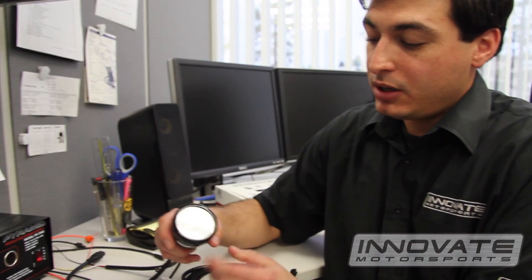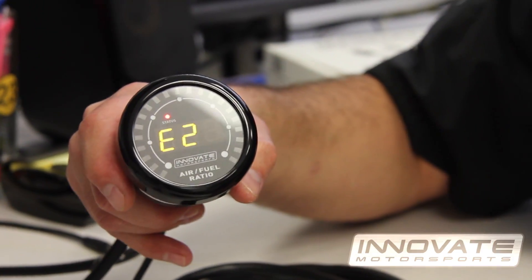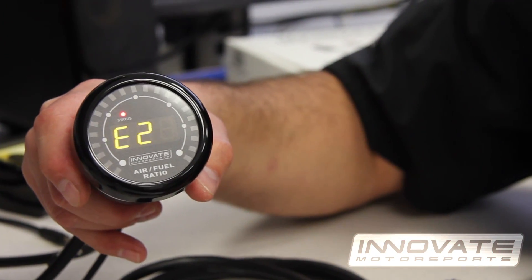Power up the unit. You'll initially see a sweep and the unit will display E2. Leave the unit powered on with the E2 error code for at least 30 seconds.